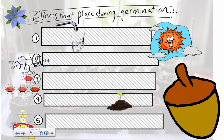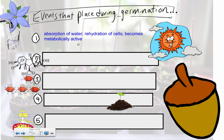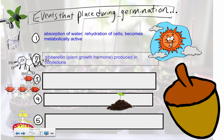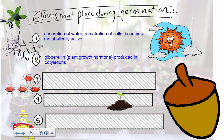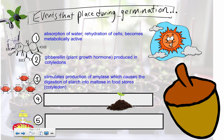Now let's look at the actual events that take place during germination. Water is going to be one of the first things - it helps kick off the metabolism. Absorption of water causes cells to become rehydrated, which kicks metabolism into full gear. Here's another plant hormone: we've talked about auxin and abscisic acid already. Here's another one called gibberellin, a plant growth hormone produced in the cotyledons, which won't be produced until the seed becomes metabolically active after water absorption.